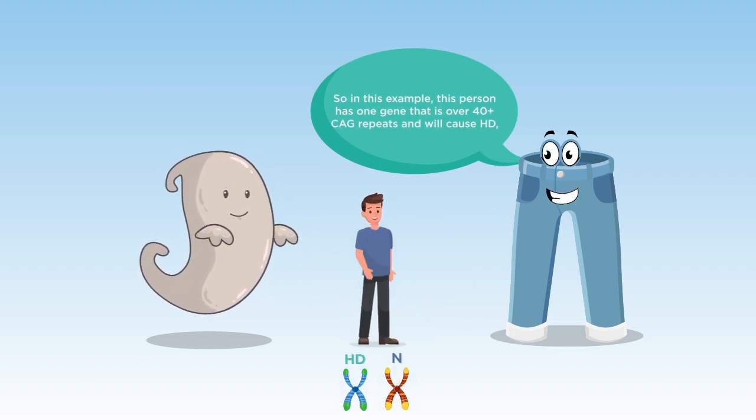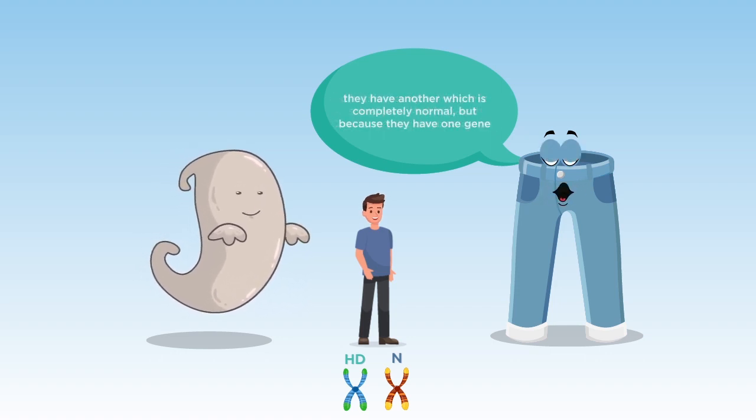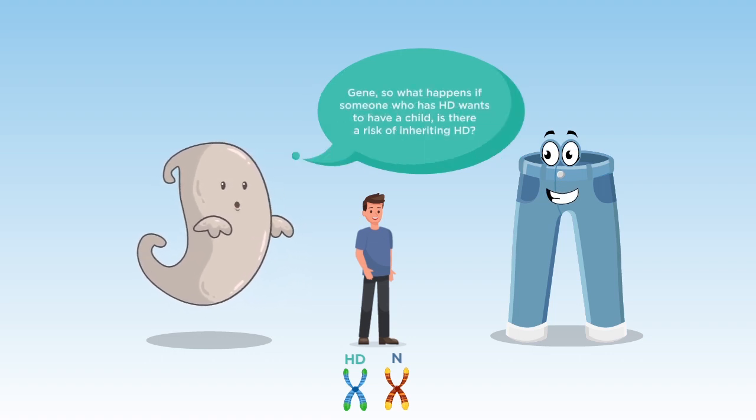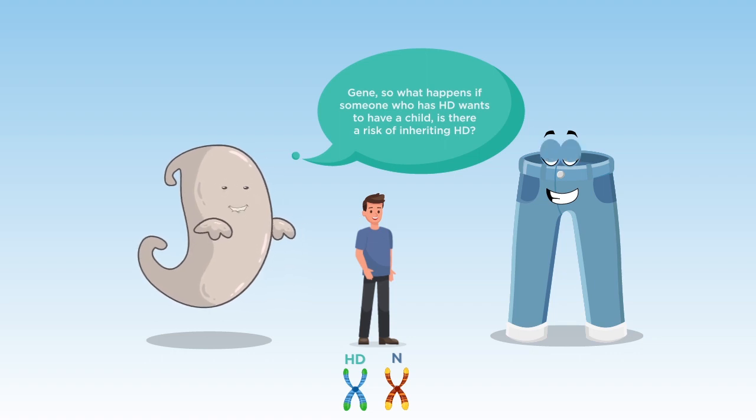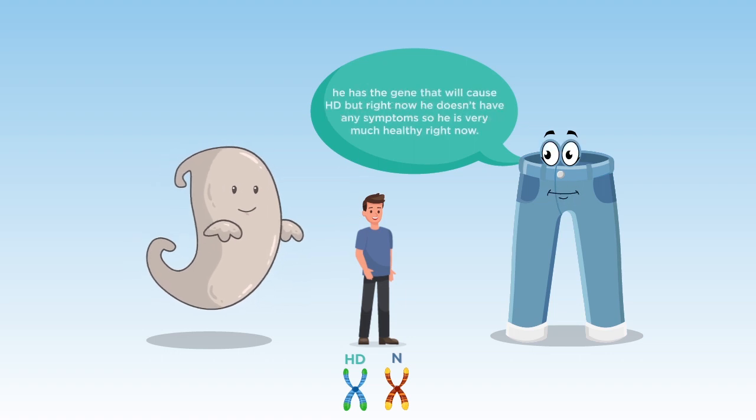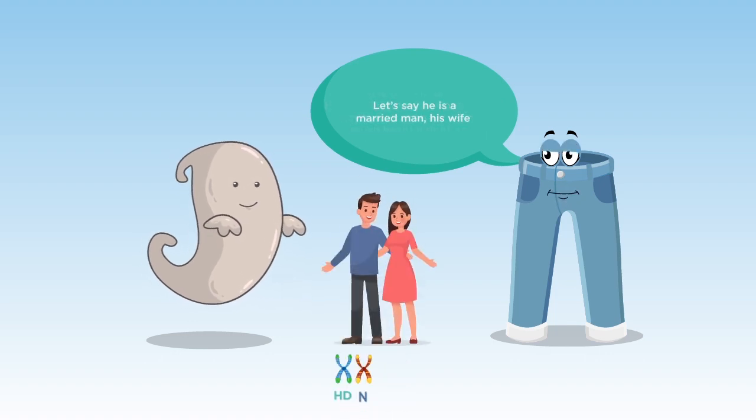So, in this example, this person has one gene that is 40-plus CAG repeats and will cause HD. They have another which is completely normal. But because they have one gene with HD, the person will unfortunately develop HD. Gene? So, what happens if someone who has HD wants to have a child? Is there a risk of inheriting HD? Yes, there is, Cody. Let's use this guy as an example. He has the gene that will cause HD, but he doesn't have any symptoms, so he is healthy right now. Let's say he is a married man. His wife comes from a family of no HD and has two normal versions of the gene that causes HD.